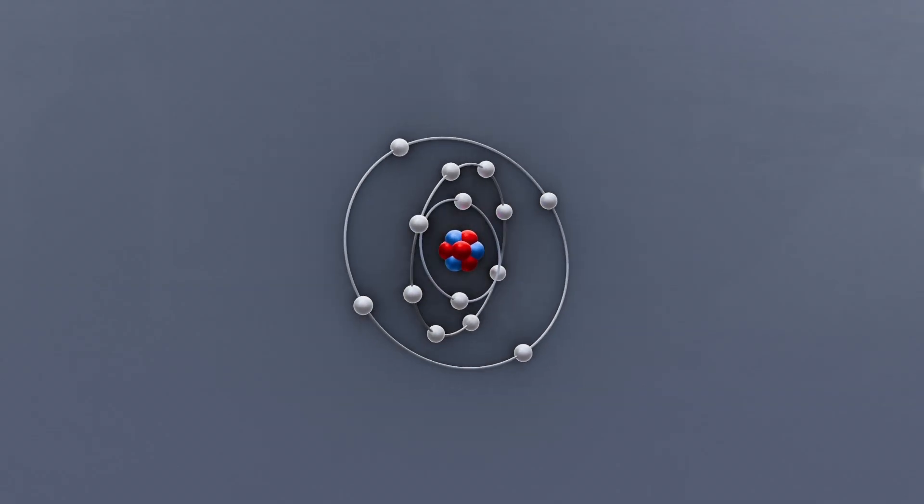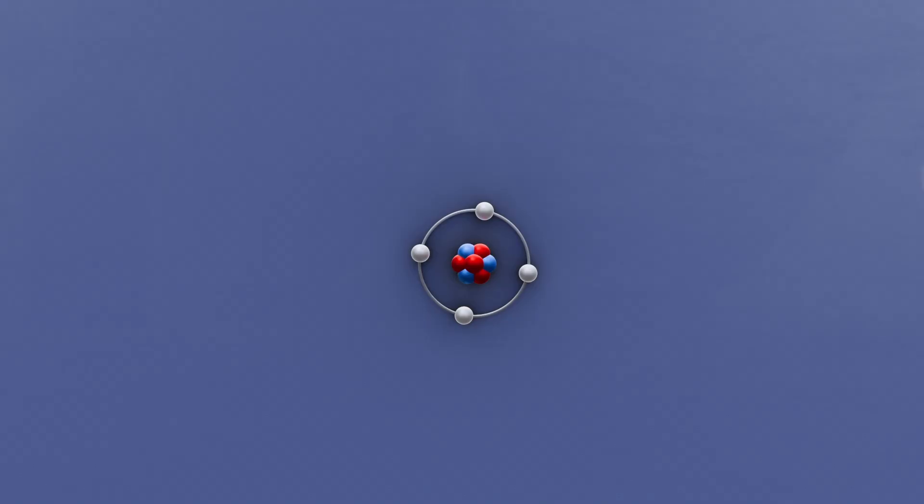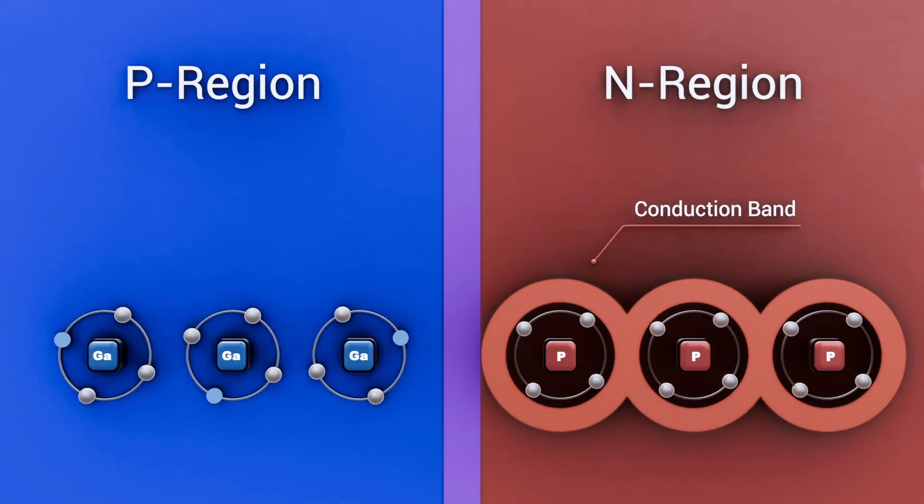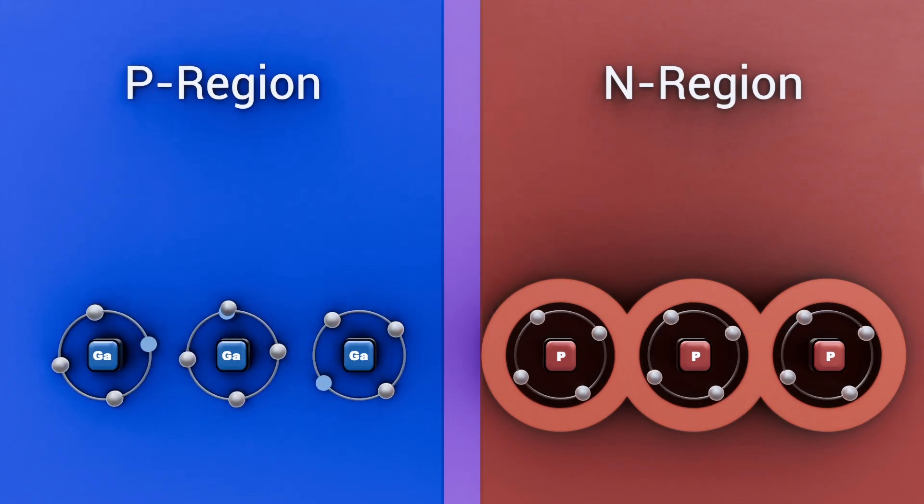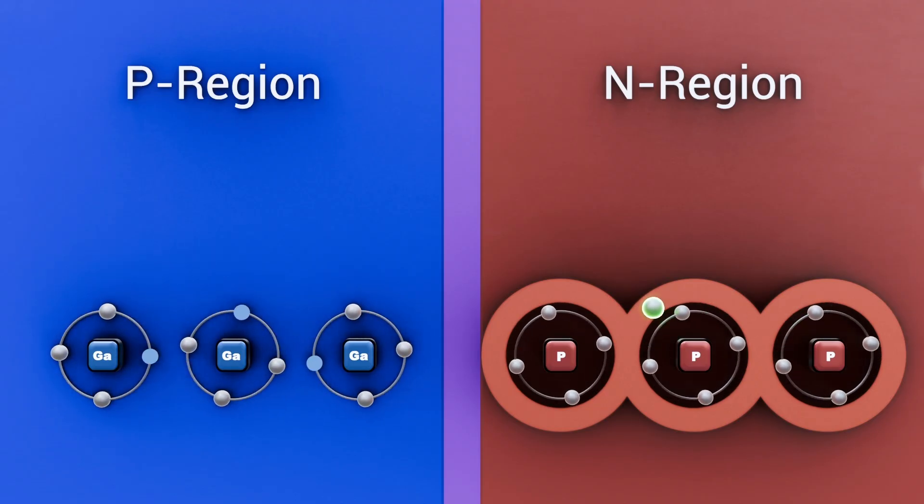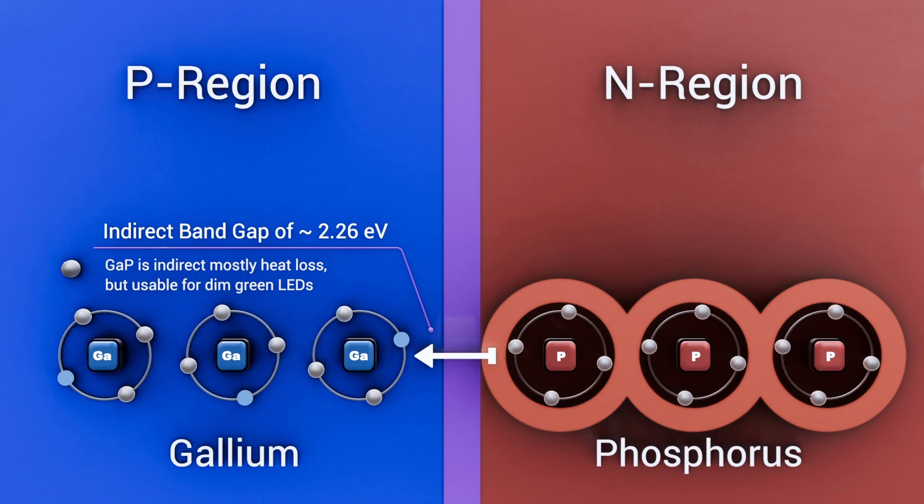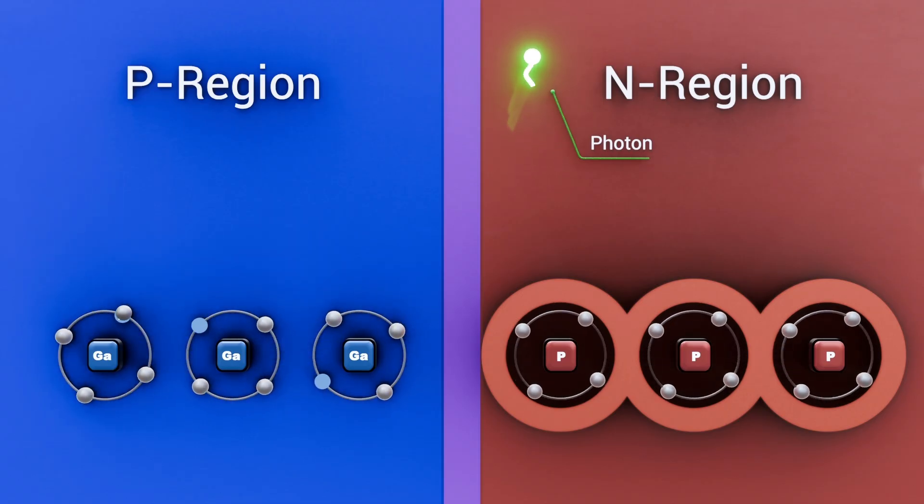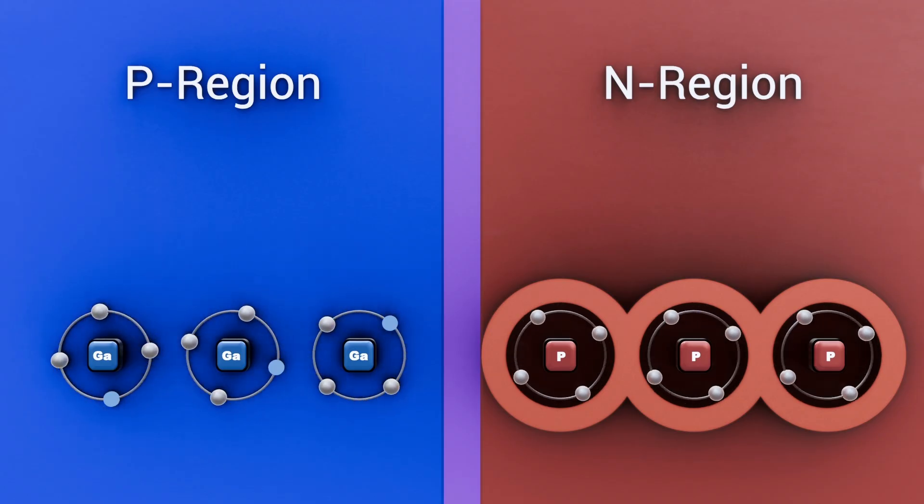Back to our shells, the outermost shell is known as the valence shell and outside of this the conduction band. Under forward bias, when connected to a battery for example, electrons in the N region's conduction band are injected across the junction into the P region's conduction band. To recombine with holes in the P side valence band, they must lose energy equal to the semiconductor's band gap. In direct band gap materials, this energy is released as a photon, electroluminescence. In indirect band gap materials, it is typically lost non-radiatively as heat.